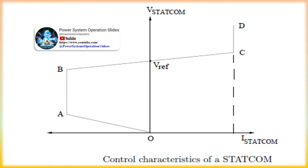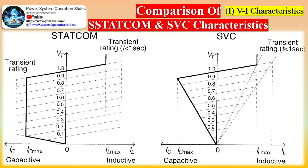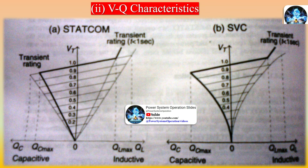FACTS would help to increase power transfer without the need for adding new transmission lines, reduction in power transmission cost, steady-state and dynamic voltage control, stability of the system, and improved voltage quality. Benefits also include oscillation damping, proper utilization of existing transmission system assets, increased transmission system availability and reliability, stability and reduction of loop flow, supply quality improvement, quick voltage regulation, increased power transfer over long AC lines, and proper utilization of machines connected to the system.